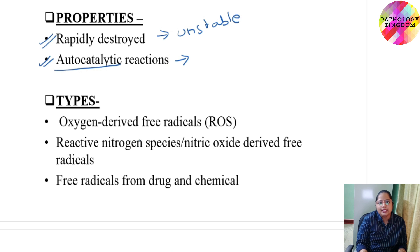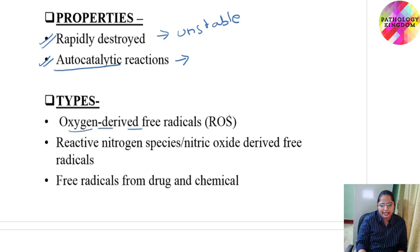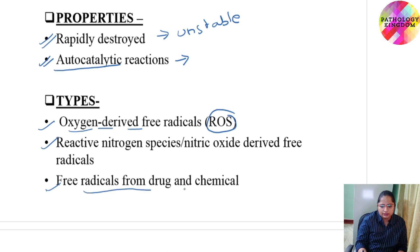Coming on to the types — there are three types of free radicals: oxygen-derived free radicals known as reactive oxygen species, reactive nitrogen species, and free radicals from drugs and chemicals.